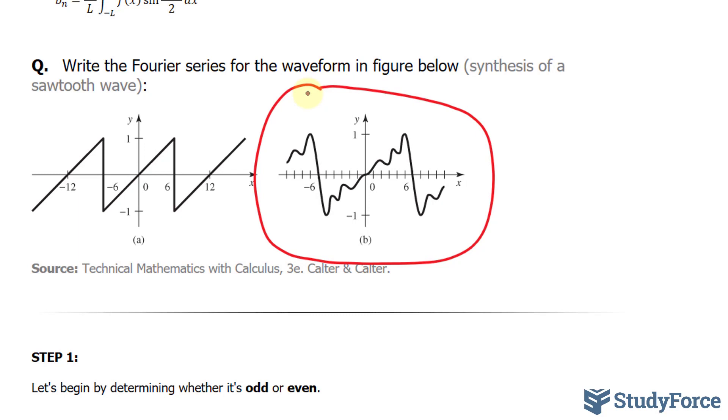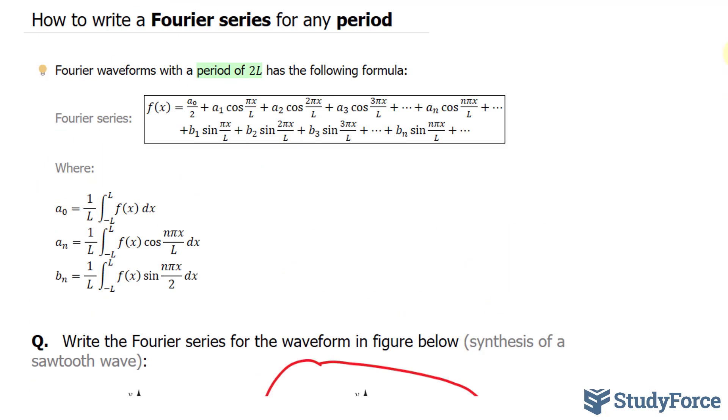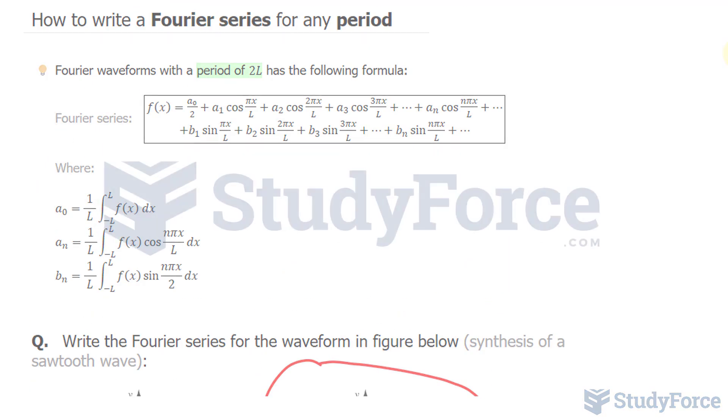Now, of course, the more terms that you add, the more it will start to look like this waveform. And there you have it. That is how to write a Fourier series for any period.